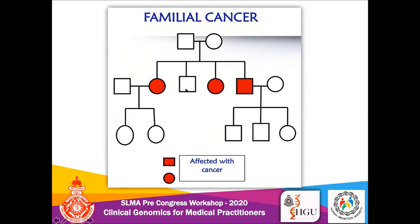For familial cancer, you can see a clustering of cancers in a particular generation, but there is no clear-cut pattern of inheritance. This is usually attributed to the combined effects of multiple genes as well as environmental factors like shared lifestyle factors or exposure to environmental carcinogens, which could cause these cancers to cluster in a particular family.